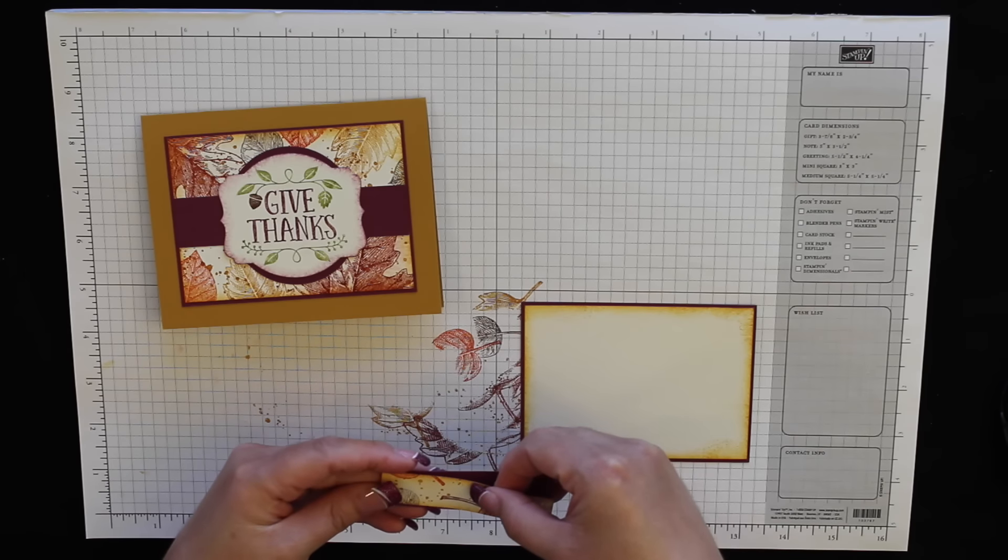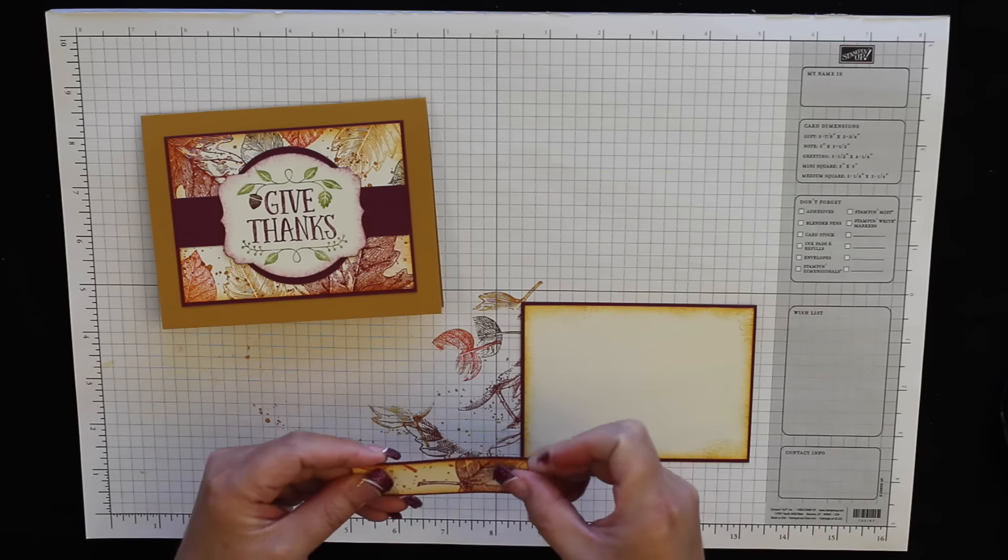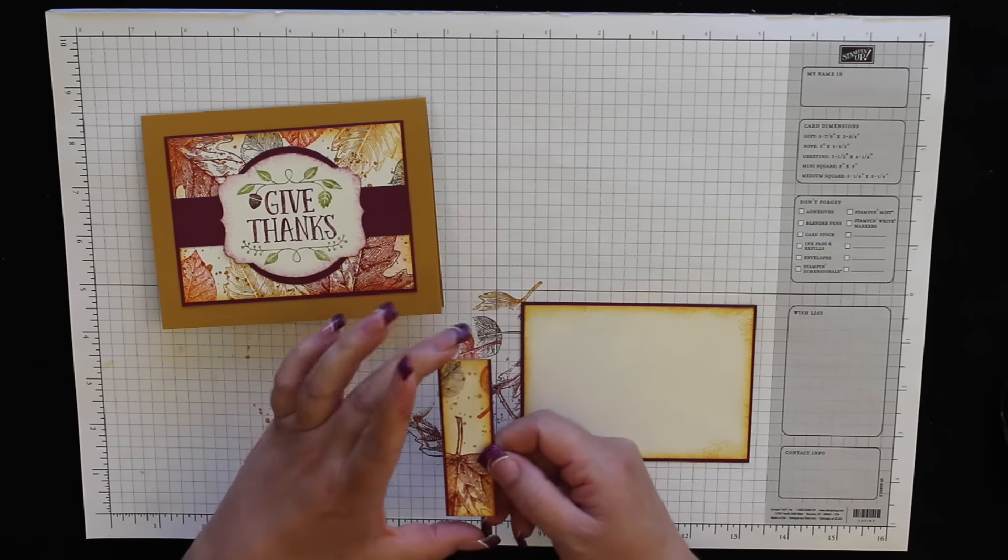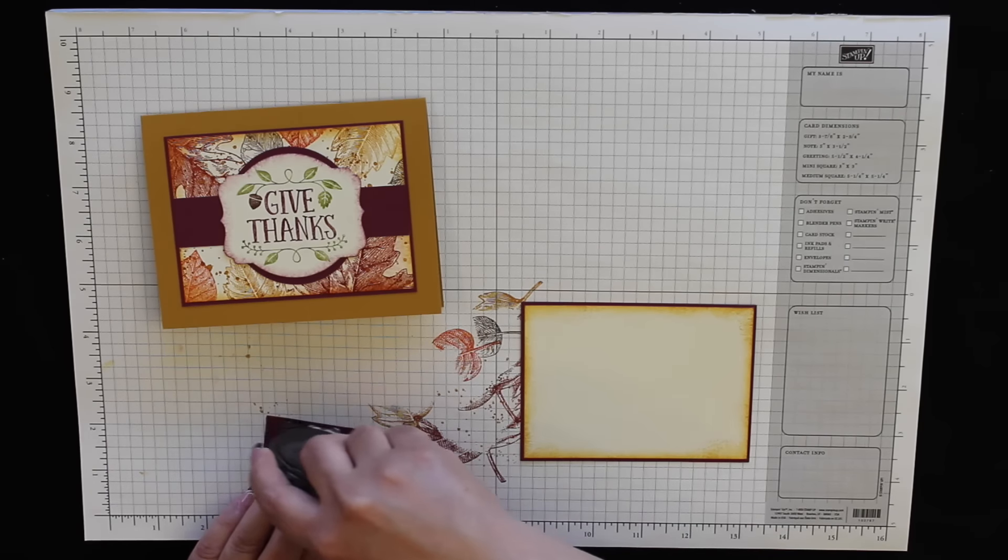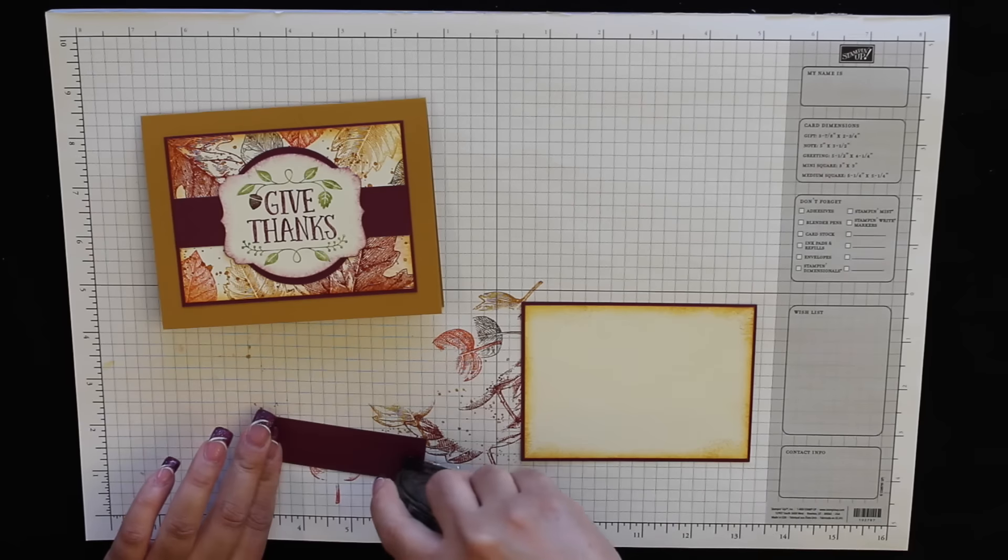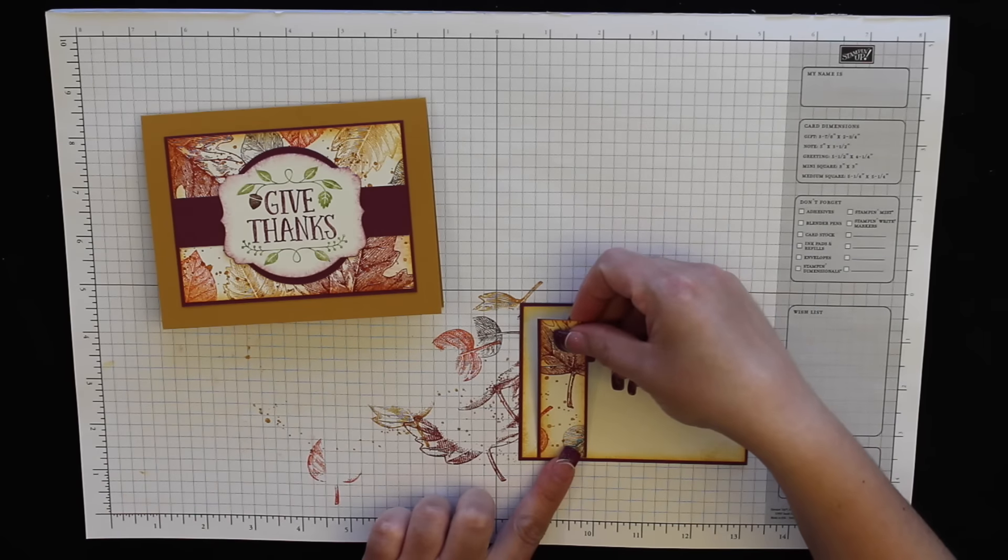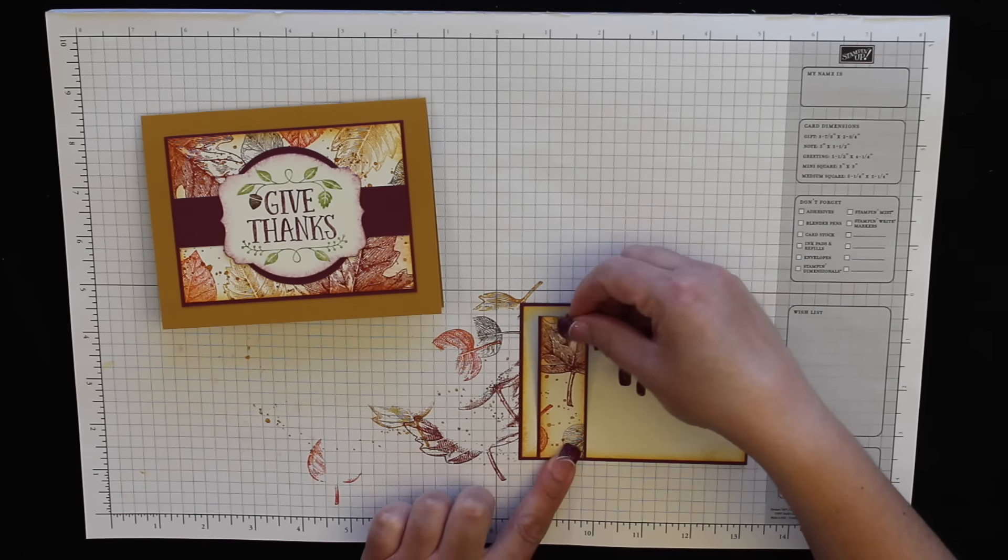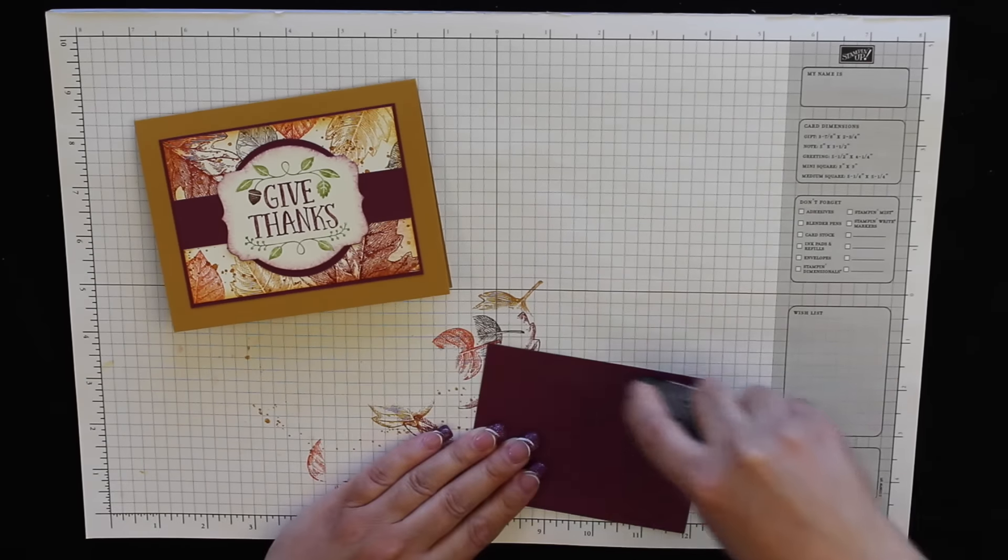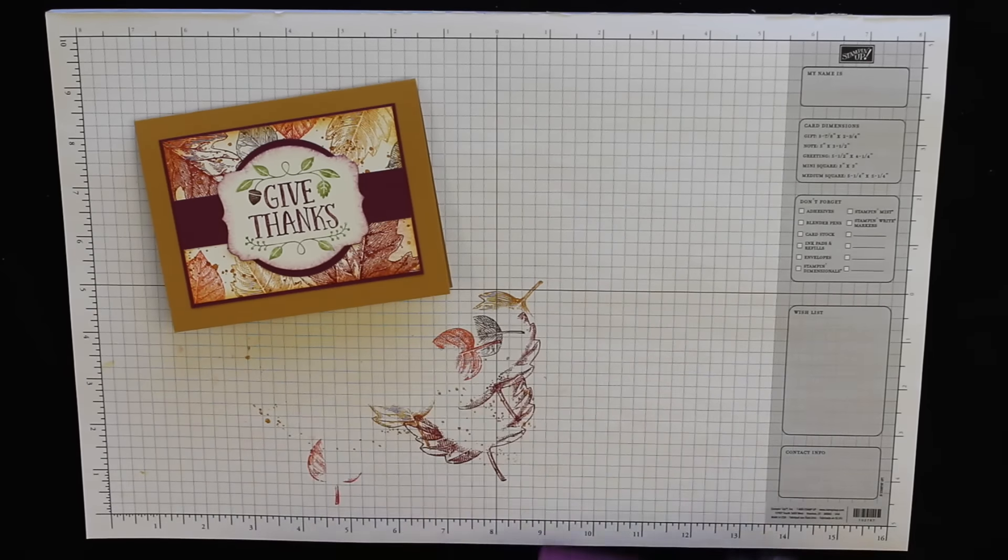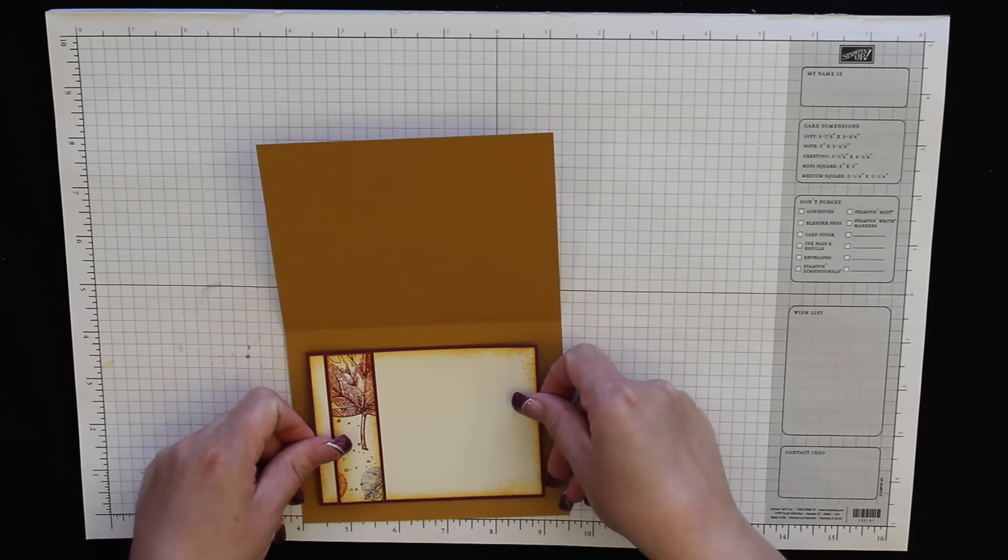They're both the same length, so you just want to make sure you have a nice border on the width going this way, but they're the same length here. And I just put this about three-eighths of an inch, quarter inch, however much you want, just over to the left side of the card. More adhesive, place that on the inside of the card.